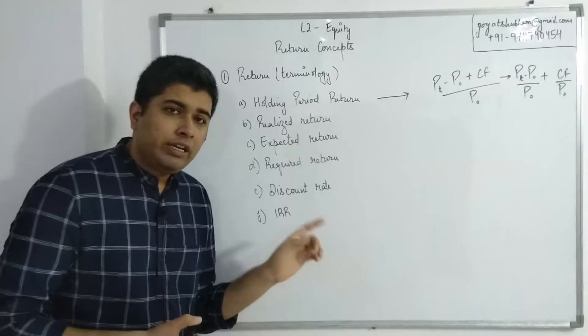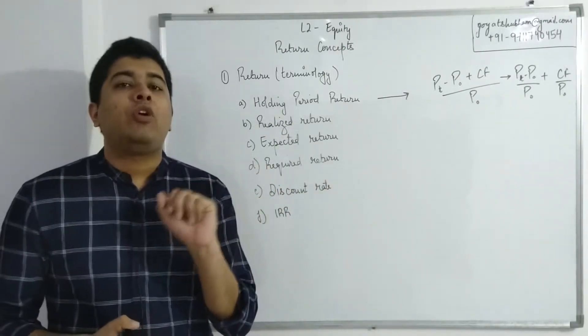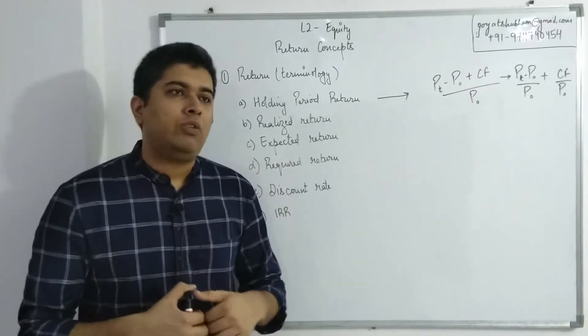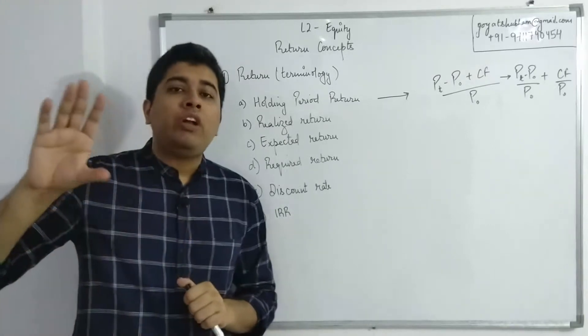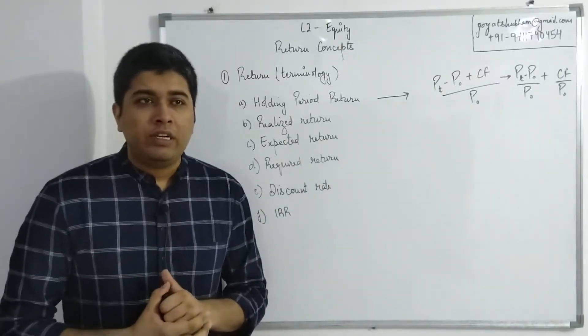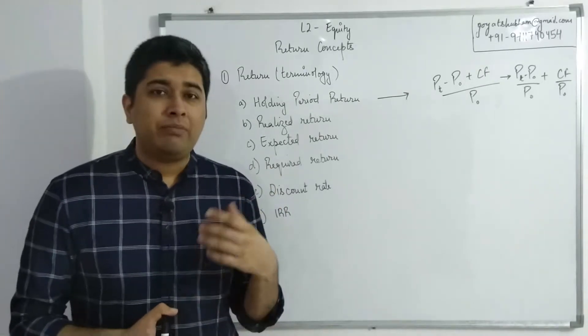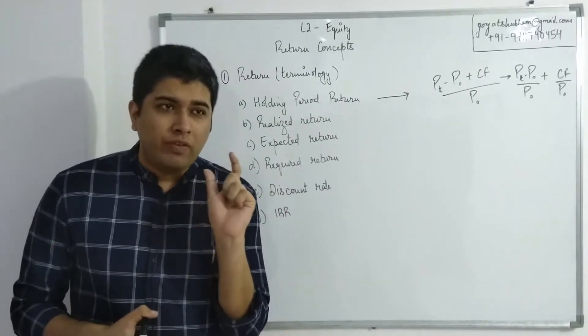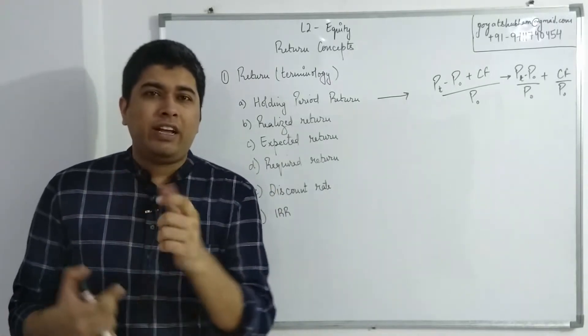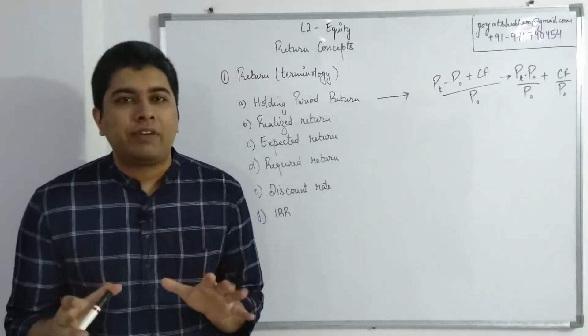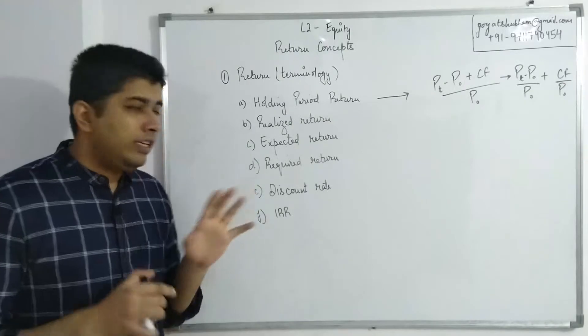Required return often could be looked at as a form of an opportunity cost. If let's say my money right now is sitting in a savings account earning 4%, if I am to divert that money and invest it into equity shares, I want at least that 4% compensation plus something else because I am taking risk. When I actually want to make an investment, the return that I want, like the bare minimum to keep me satisfied, that is required.